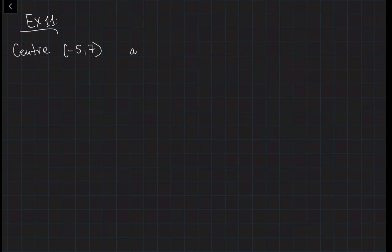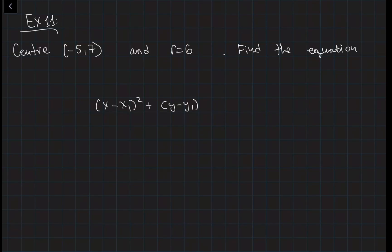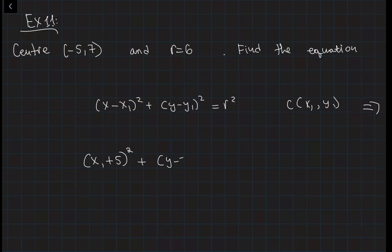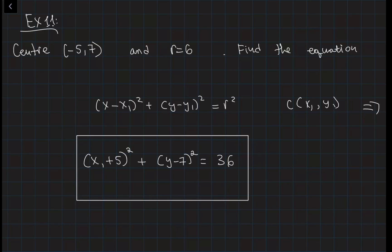Example 11: find the equation of the circle with center (−5, 7) and radius 6. Using the general equation, x1 = −5, so x minus (−5) becomes x plus 5. Then (x + 5)² + (y − 7)² = R², and R = 6 so R² = 36. The equation is (x + 5)² + (y − 7)² = 36.